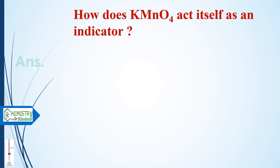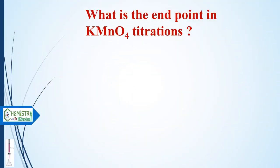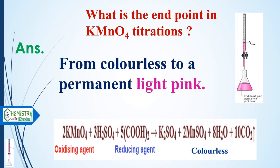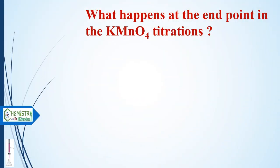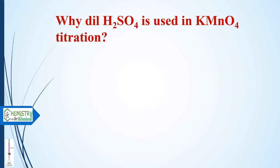How does potassium permanganate act as a self-indicator? In the presence of dilute sulfuric acid, potassium permanganate reacts with the reducing agent (oxalic acid). When all the reducing agent has been oxidized, the excess potassium permanganate is not decomposed and imparts a pink color to the solution. The endpoint is when the solution changes from colorless to a permanent light pink color, as the oxalate ion is completely oxidized to CO2 and Mn²⁺ ion.